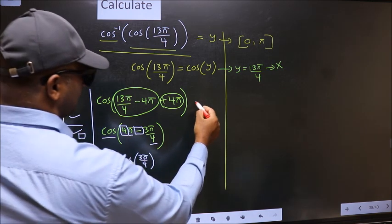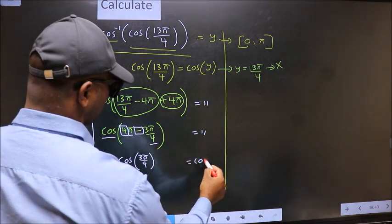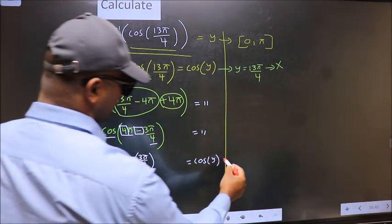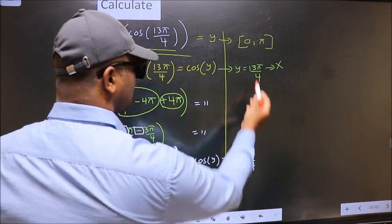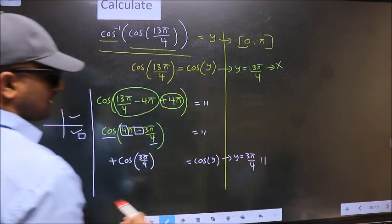Now on the other side no change. Equal to cos y. Comparing both sides we get y to be 3π by 4. Does this lie in this interval? Yes. So this is our answer.